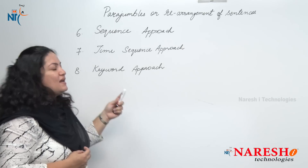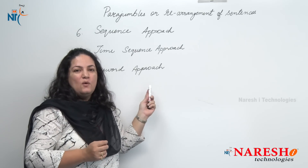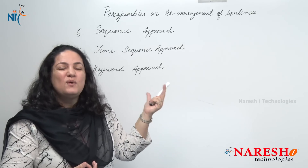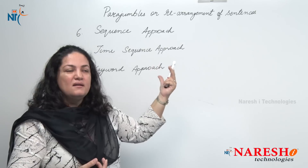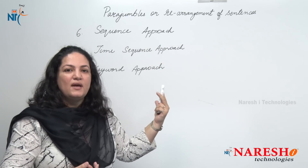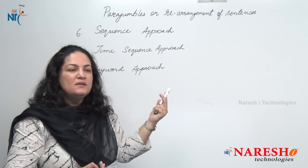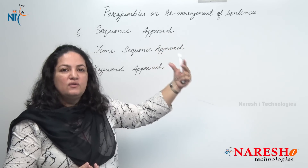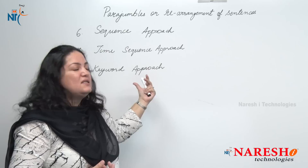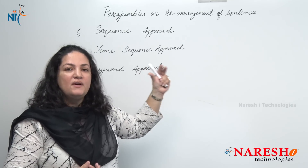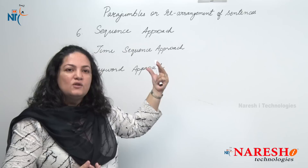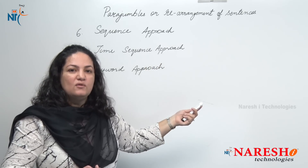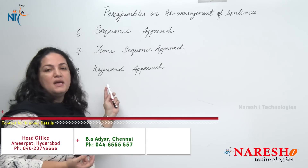The eighth approach is the keyword approach. By keyword approach, we mean that a particular word appears in two sentences together. If any particular word appears twice in the sentences, those sentences will follow a consecutive order and there will be no gap between them.